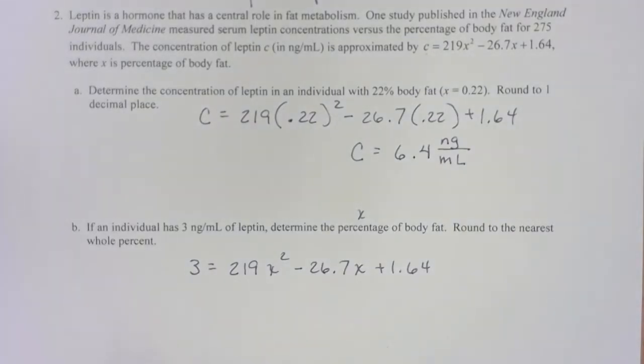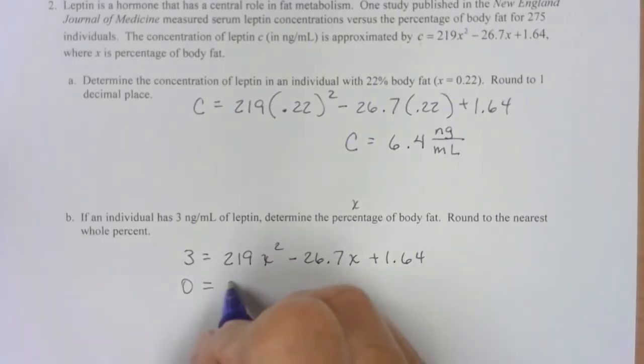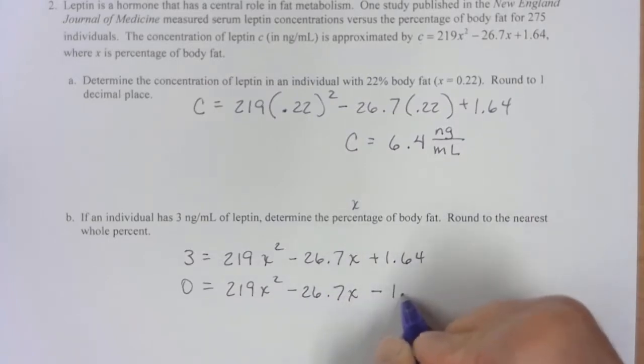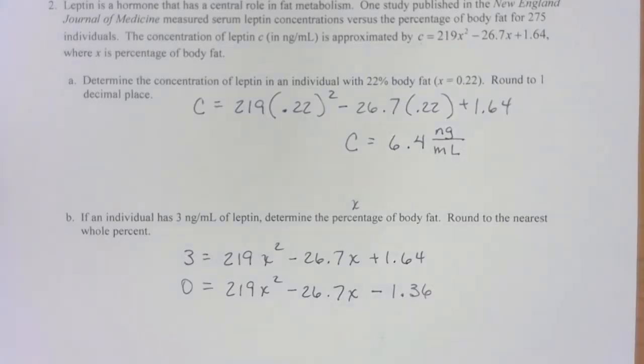Again, like earlier with the gas mileage, I need to get all values to one side. So if I only have to move one, I'll move it to the other side. So I've got 2.19 x squared minus 26.7 x minus 1.36. And like before, that does not look like it's appetizing at all to go and factor. So I'm going to use quadratic formula.